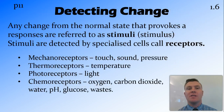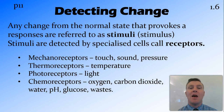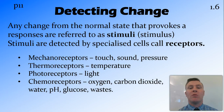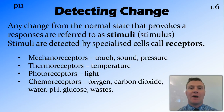The first thing the body does is detect the change, and it detects the change through specialised cells called receptors. When we talk about the change, we're talking about any movement from the normal state that will provoke these receptors, and these are together called stimuli.